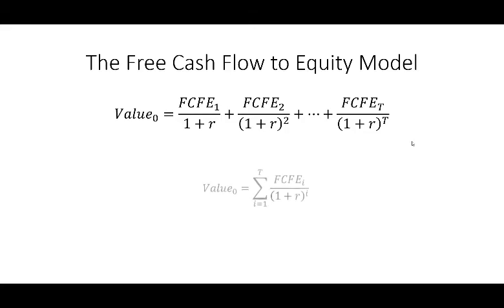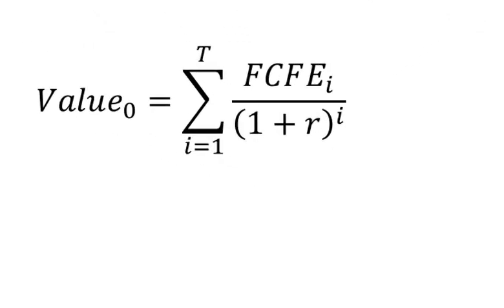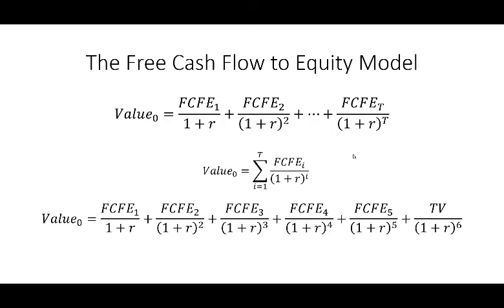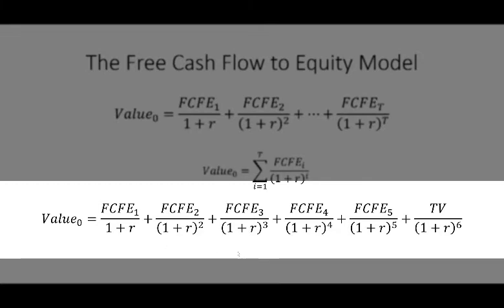You can write the formula more compactly as just the sum of all those free cash flows to equity. This is how the model is usually applied in practice. Financial analysts usually agree that it's very difficult to forecast beyond about five years. So what they do is estimate free cash flow to equity for the next five years, and then estimate a terminal value at that point. The idea is after five years we can't keep forecasting, so what is the company worth at that point in time? You discount them all back by the appropriate time frame.